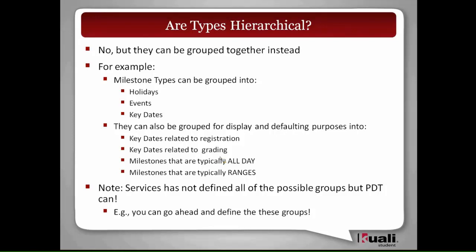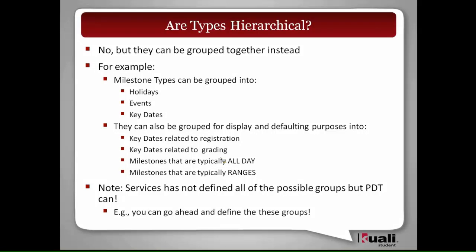The services team doesn't want to be a bottleneck. There's no way we could ever define all the types and groups that exist in the system — we're not intending to. We're just trying to give a strong enough set so that as people extend them, they understand what makes sense to add. There is a process about notifying services so we can review them and just keep an eye on it, to make sure nobody creates a type that doesn't fit the overall scheme — we might say, what you're trying to do here might be better done on a different object. But feel free to move ahead.